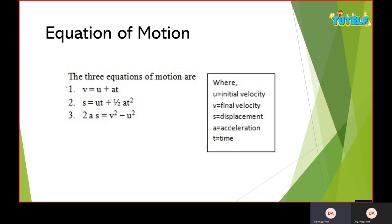The first equation is v equals u plus at. The second is s equals ut plus half at squared. The third is 2as equals v squared minus u squared. Here, u is the initial velocity, v is the final velocity, s is the displacement of the object, a is the acceleration.